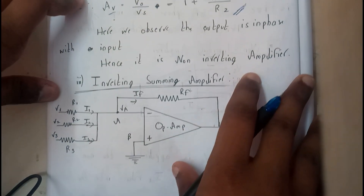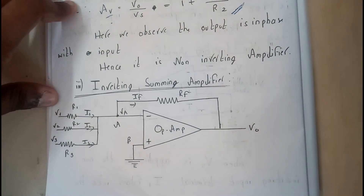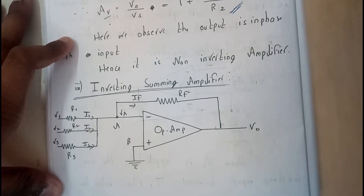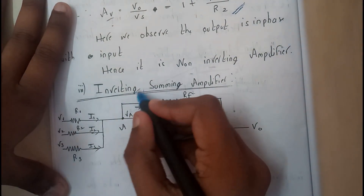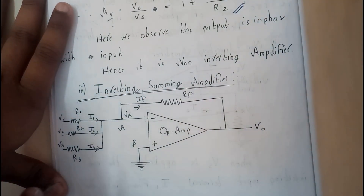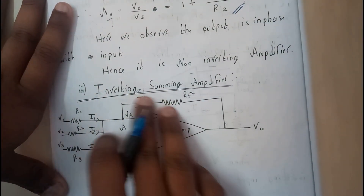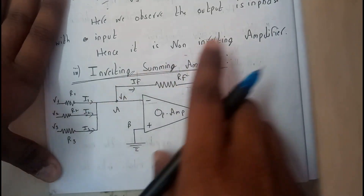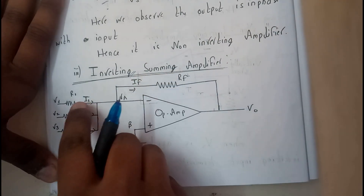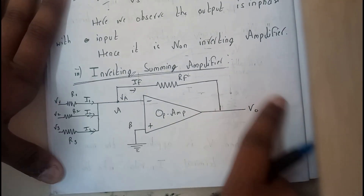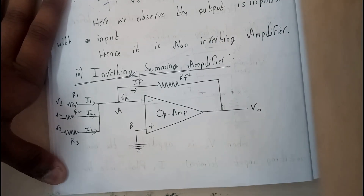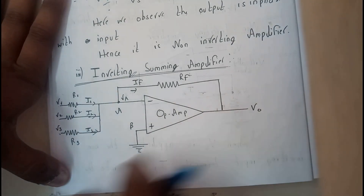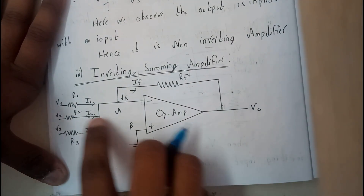Hello guys, we are back with our next tutorial. In this tutorial let's see all about the inverting summing amplifier. These are really important in applications — you can directly ask for five marks. Basically, with the summing amplifier, if there are three inputs, it's going to add them and give that as the output. V1 plus V2 plus V3 is going to be our result V0, and that is what we need to prove.